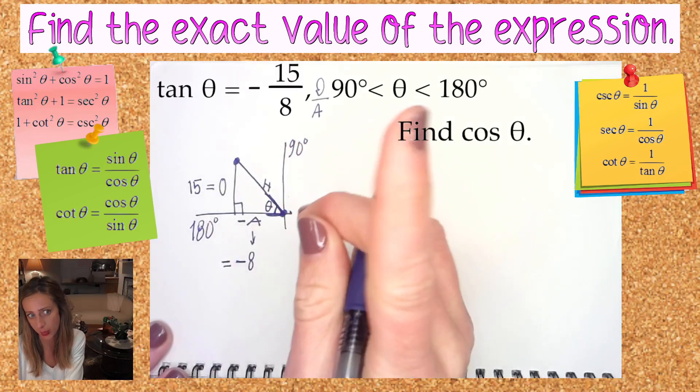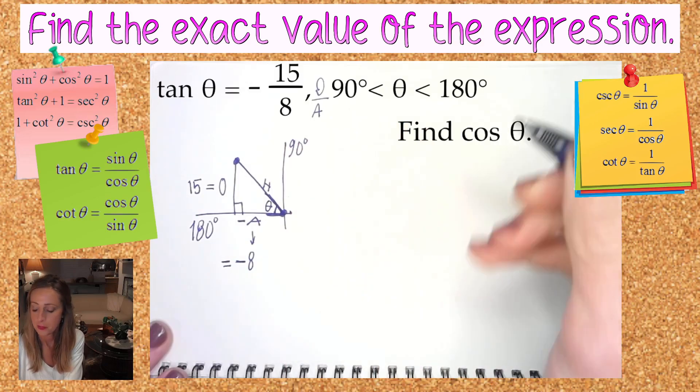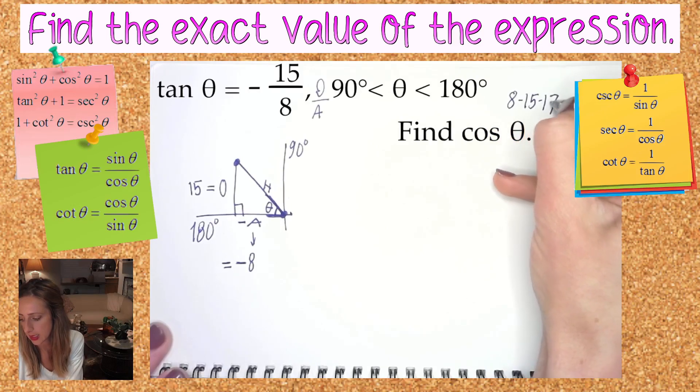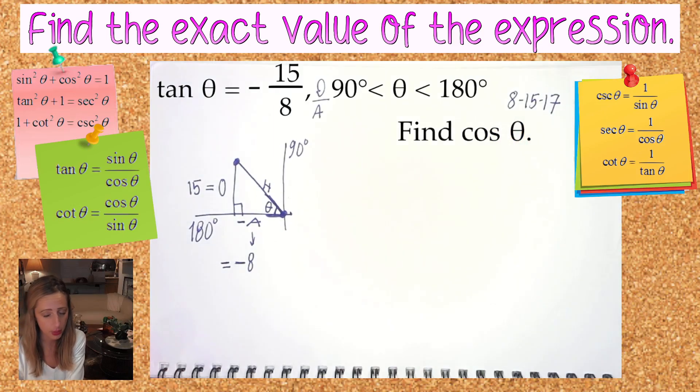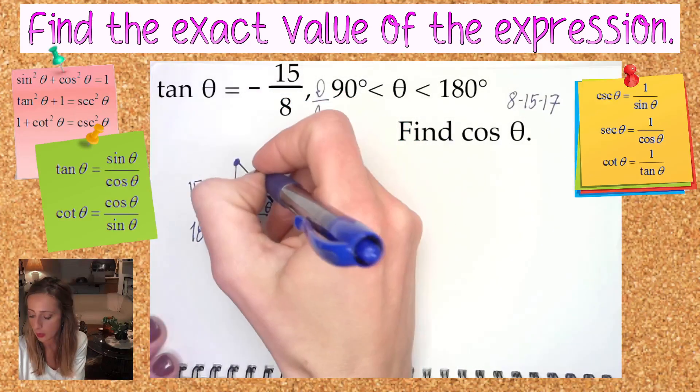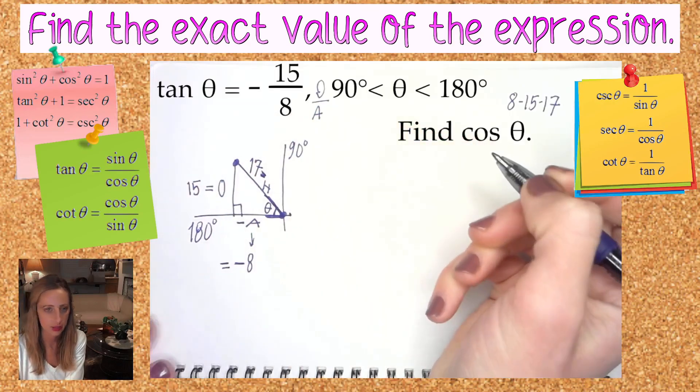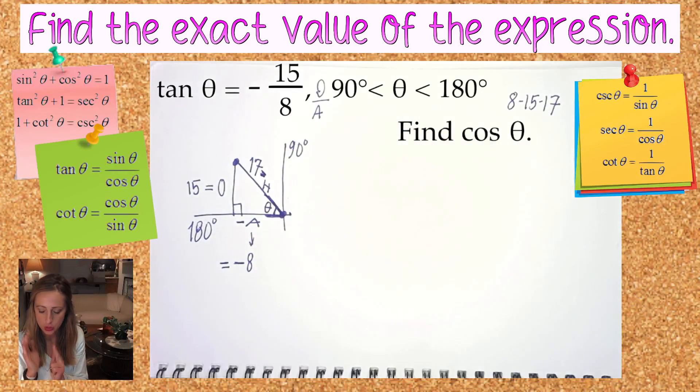My opposite is up or positive 15. Also, I've studied and I know that 8-15-17 is a very well-known Pythagorean triple. Now I don't have to do Pythagorean theorem because I am quite clever. So 8-15-17, there we have it. Again, the hypotenuse is always positive.